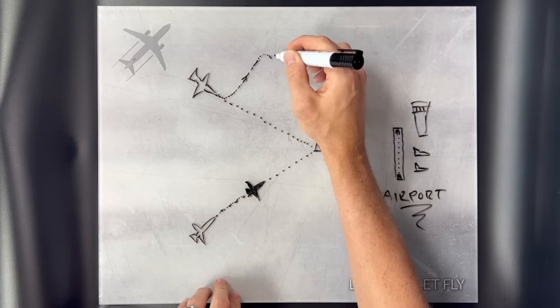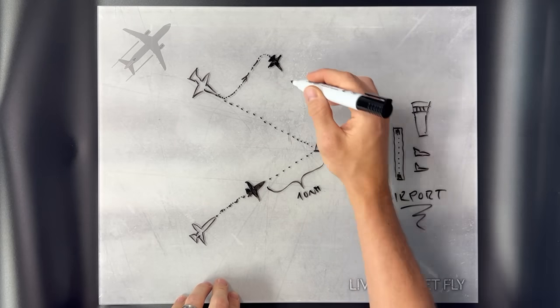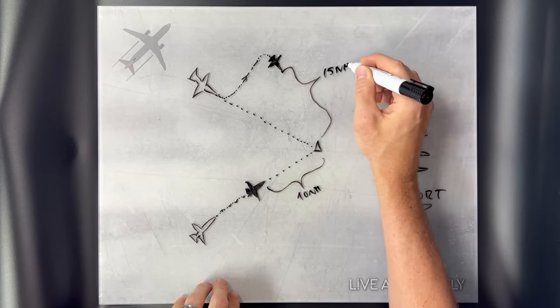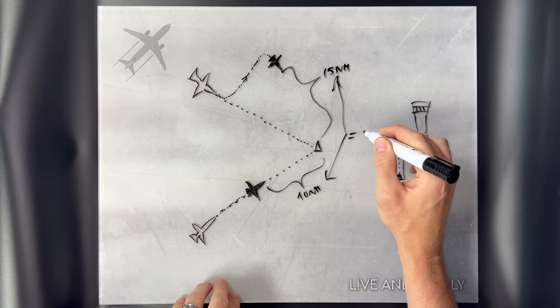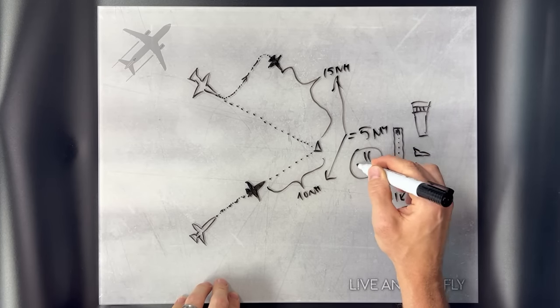So the ATC guy has to decide which one goes first and who should head away. Depending on how much distance is needed between the flights, that second flight flies in the wrong direction for some time before the controller instructs the flight to turn back towards the airport behind the other aircraft.